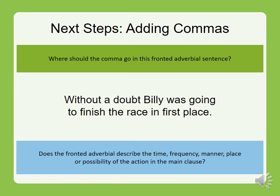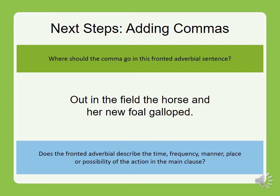Let's have a look at the next example. Where should the comma go in this fronted adverbial sentence? Without a doubt, Billy was going to finish the race in first place. Well done — it goes after without a doubt. Does this fronted adverbial describe time, frequency, manner, place, or possibility? It describes manner — how something has happened. Next example: Out in the field, the horse and her new foal galloped. Where does the comma go? Well done, it comes after field. What does this describe? Place, because it's out in the field.